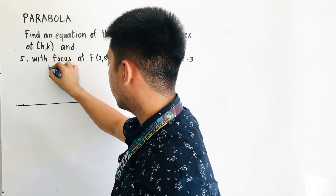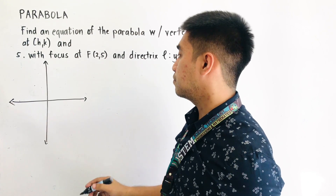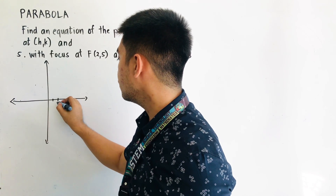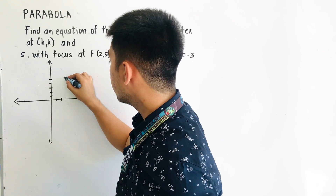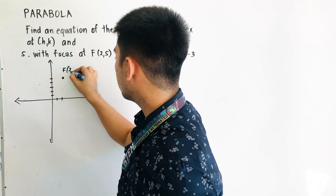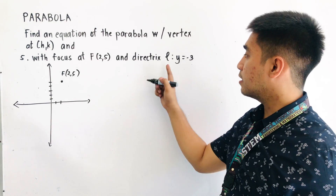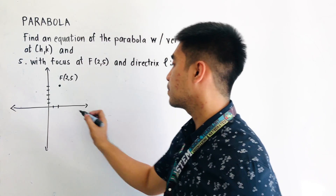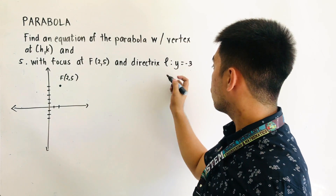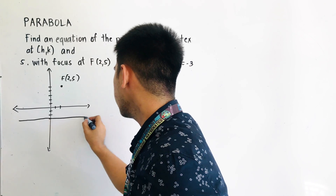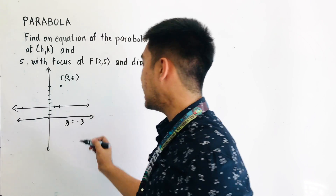The focus is located at (2, 5). And we also have the directrix: y equals negative 3. So this is our directrix, y equals negative 3.